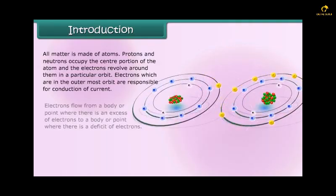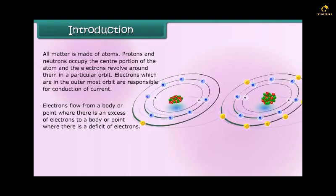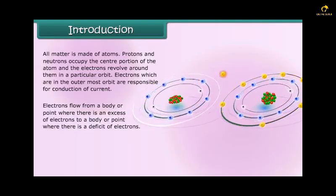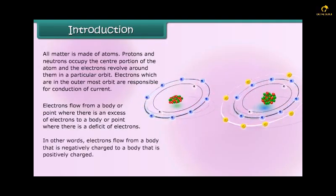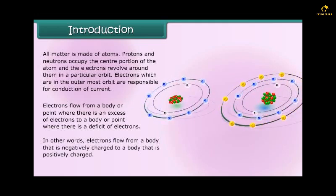Electrons flow from a body or point where there is an excess of electrons to a body or point where there is a deficit of electrons. In other words, electrons flow from a body that is negatively charged to a body that is positively charged.